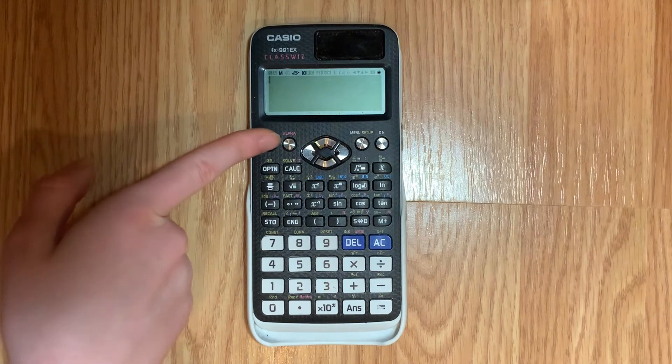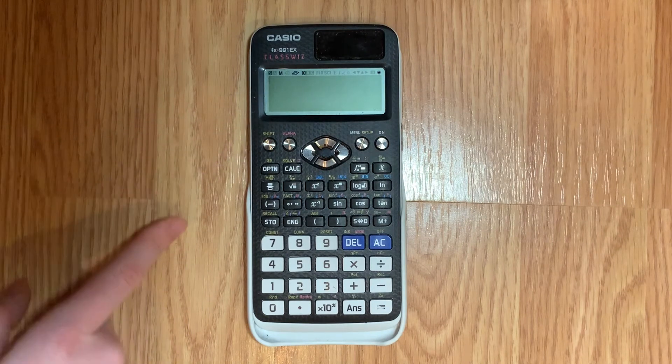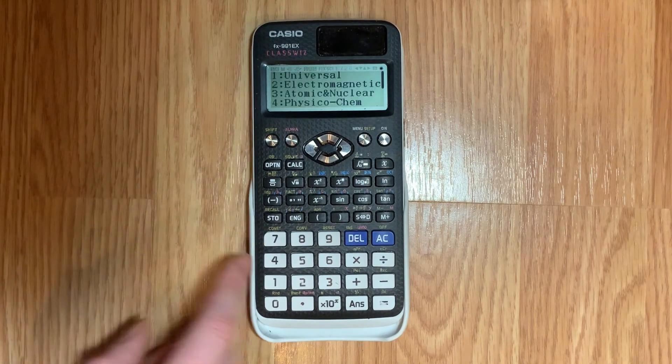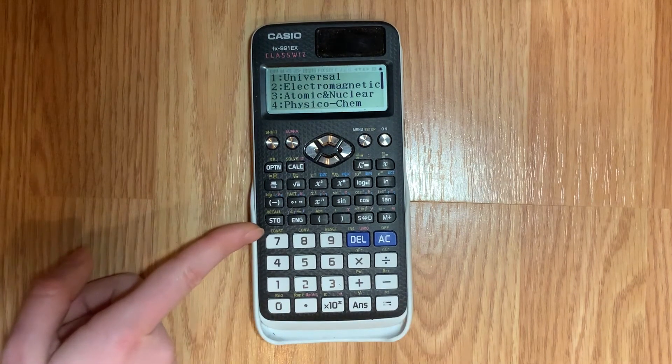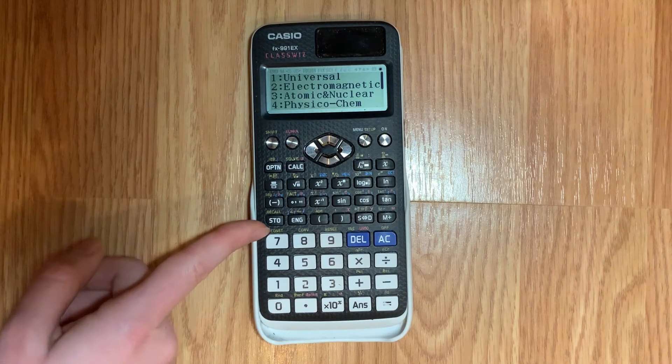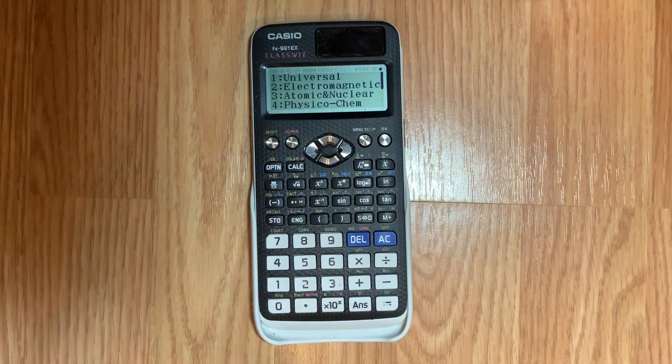Push the shift button at the top left of your calculator and then push the number seven. As you can see above the number seven there are the little words in yellow, C-O-N-S-T, const which stands for constant.